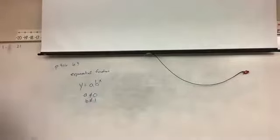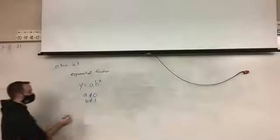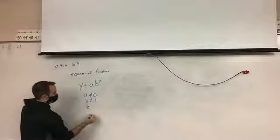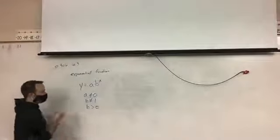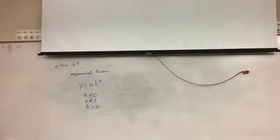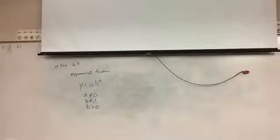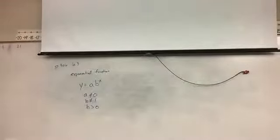b cannot be 1, and b also needs to be positive — b needs to be greater than zero. So there are some stipulations here: a could be anything except zero, and b has to be a positive number that is also not equal to 1.